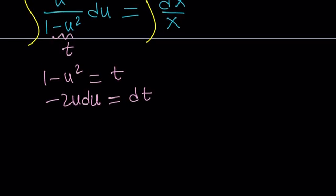Integrating both sides, the left gives negative 1 half times ln absolute value of t, and the right gives ln absolute value of x plus a constant. Now back-substituting t equals 1 minus u squared gives negative 1 half ln absolute value of 1 minus u squared equals ln absolute value of x plus c. Then back-substituting u equals y over x gives negative 1 half times ln absolute value of 1 minus y squared over x squared equals ln absolute value of x plus c.